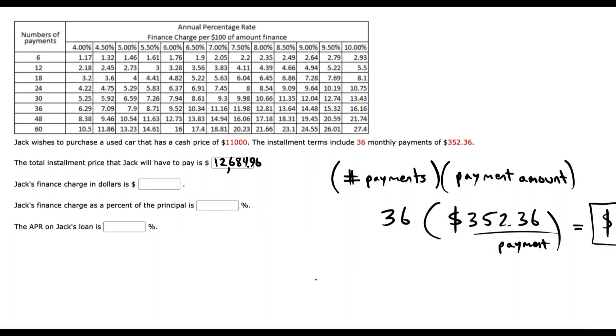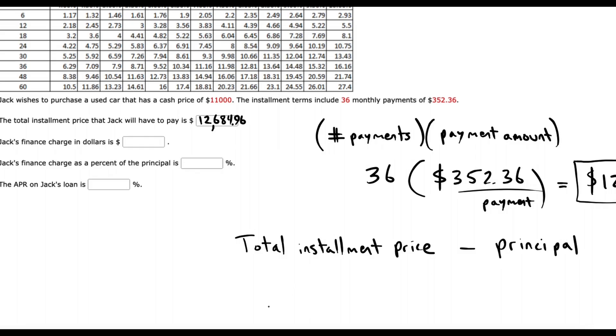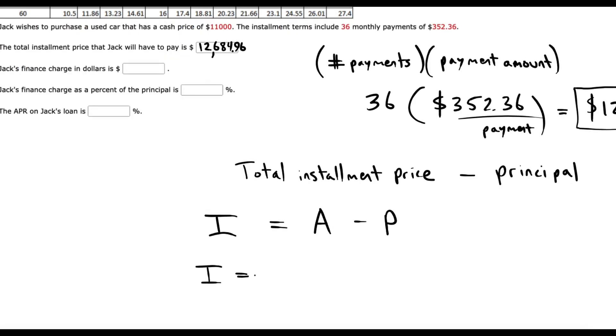So I'll take that total installment price and subtract the principal. Basically, the formula that I'm doing there is I equals A minus P. So it will be $12,684.96 minus the $11,000 borrowed.